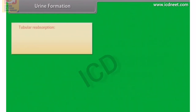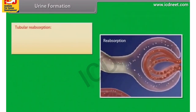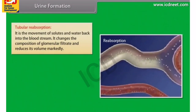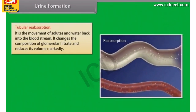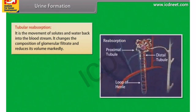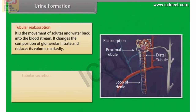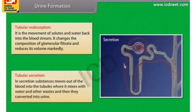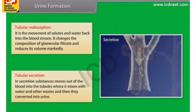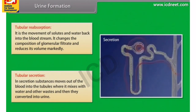The second process is tubular reabsorption: it is the movement of solutes and water back into the bloodstream, which changes the composition of the glomerular filtrate and reduces its volume markedly. The third process is tubular secretion: substances move out of the blood into the tubules, where they mix with water and other wastes and are converted into urine.